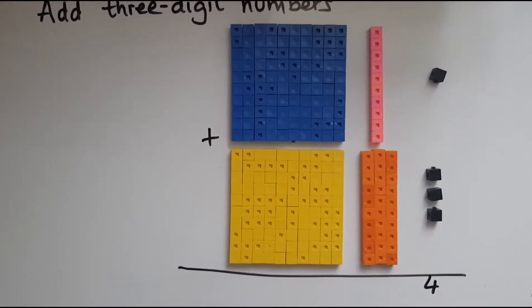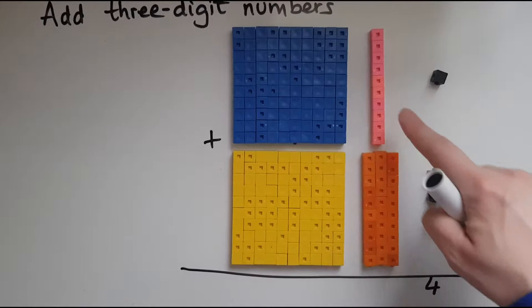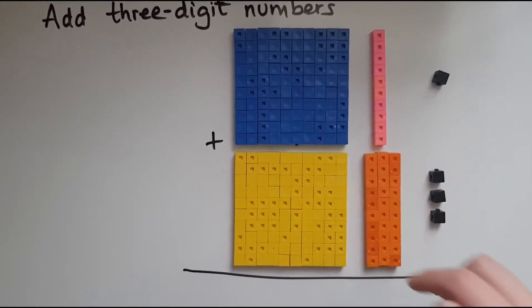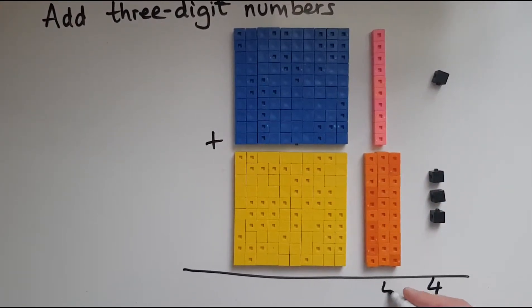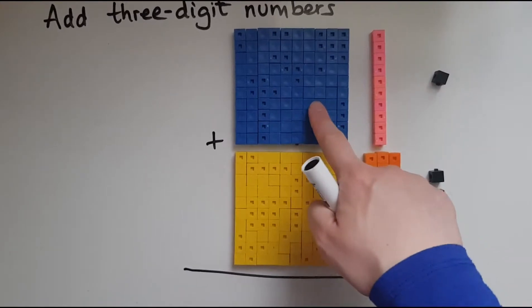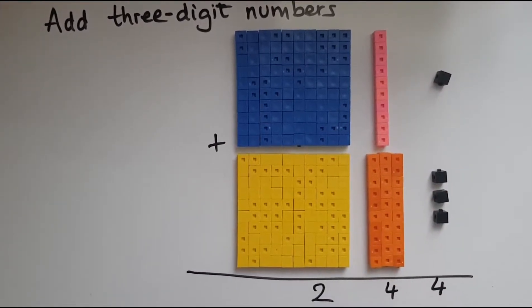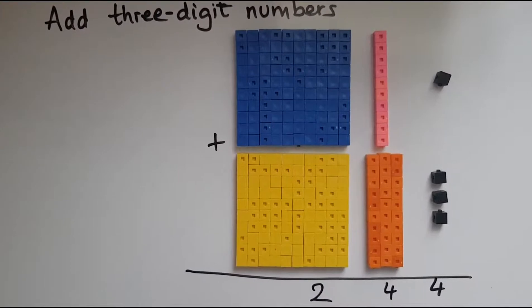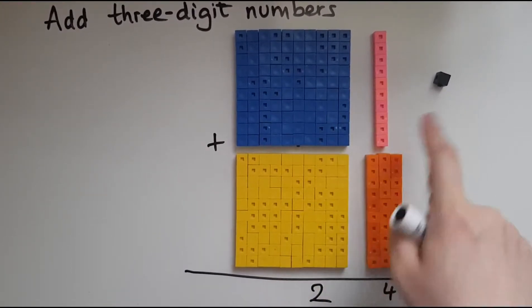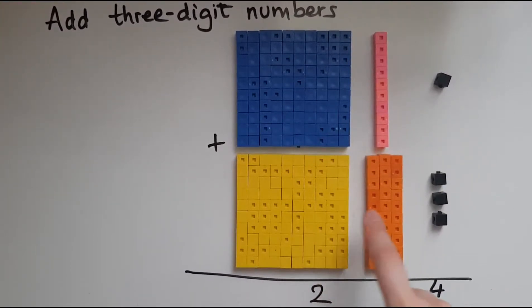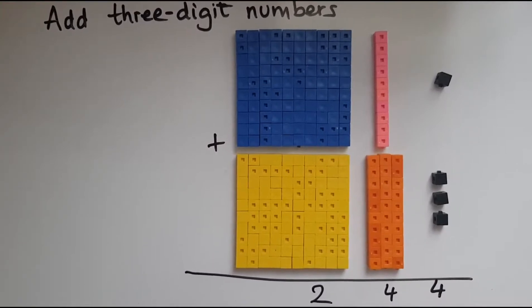And I'll look at the tens now. So I've got one, two, three, four of them. And I've got one, two of these. So the number that I get when I add 111 and 133 is 244.